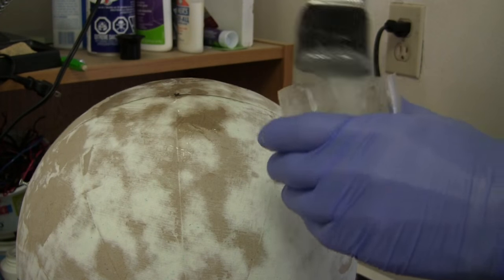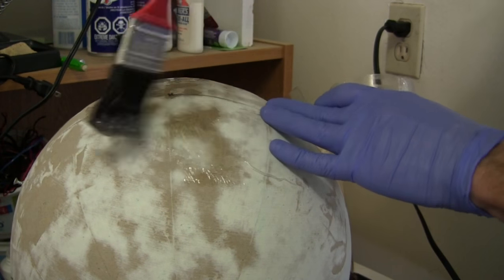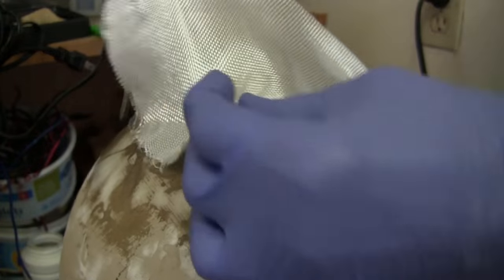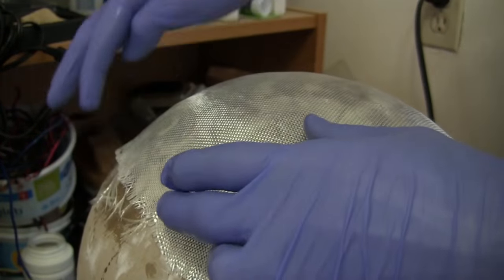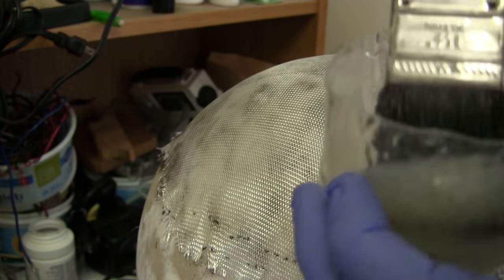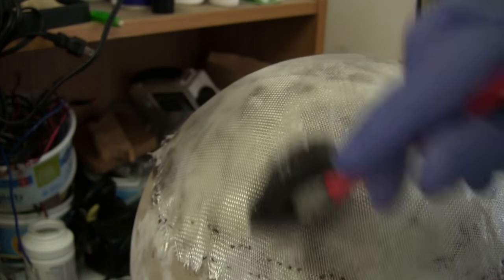To apply the piece to the globe, I start by applying resin using a paintbrush and the piece of fiberglass. Notice how the fiberglass shapes well to the globe's curvature. I don't want any wrinkles or overlapping. I make sure to wet the fiberglass well with the resin.